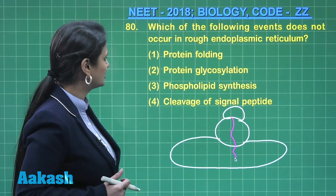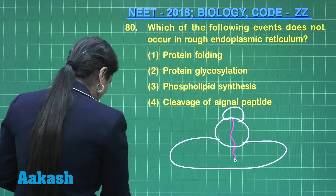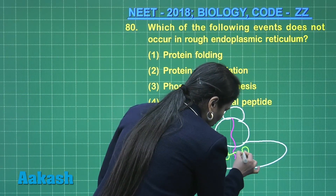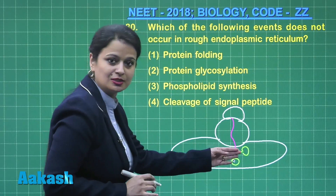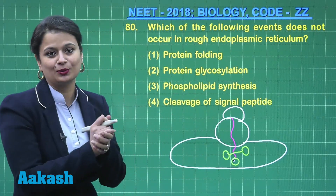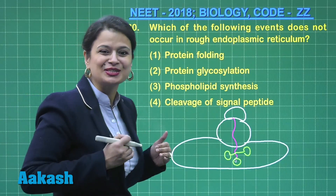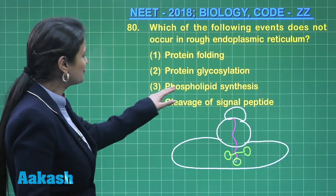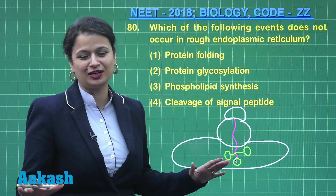Protein folding is quite correct. Protein glycosylation is a very important function of rough ER — the protein being synthesized gets attached with sugars (oligosaccharides), a phenomenon known as glycosylation, resulting in the formation of glycoproteins. It is important to keep in mind that glycosylation starts in the rough ER but is completed in the Golgi bodies. Coming to phospholipid synthesis — this is a function of smooth ER.